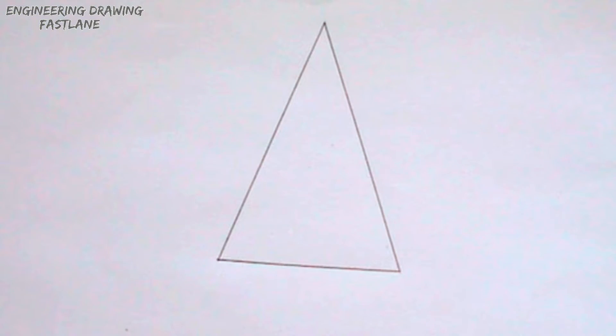To draw the circumscribing circle of a triangle, the first step to take is to draw the given triangle. I have already done this step.